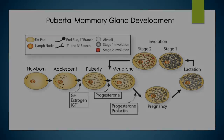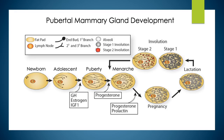Pubertal development. At birth, the gland is just a rudimentary ductal system, yet it is competent to produce milk. Fetal exposure to maternal hormones can cause milk expression in human babies, sometimes referred to as witch's milk. As these endocrine influences subside, the gland undergoes a period of allometric growth, keeping pace with overall body development, until puberty when expansive proliferation occurs, filling the fat pad under the influence of hormones and growth factors. Terminal end buds are club-shaped structures at the tips of growing ducts that penetrate the fat pad, driven by proliferation of cap cells and the underlying preluminal epithelium.